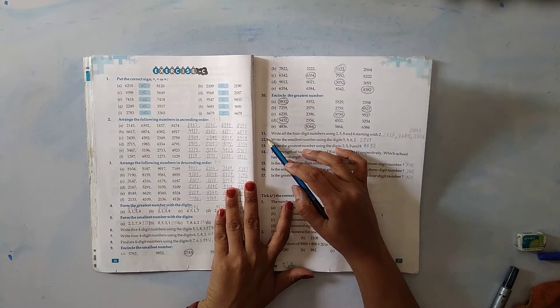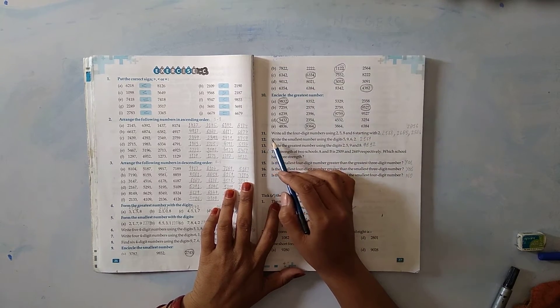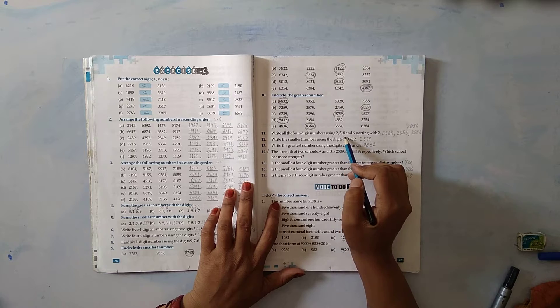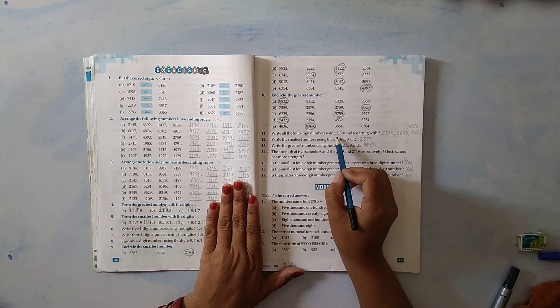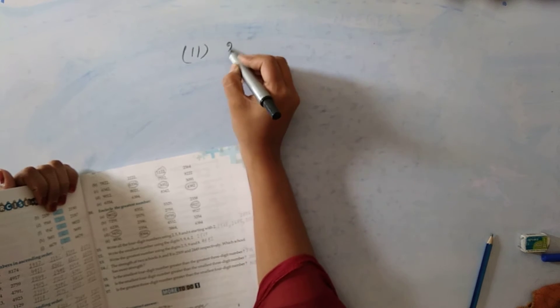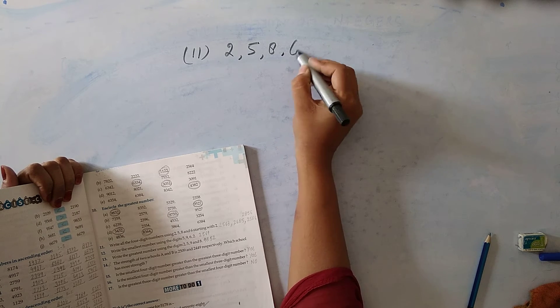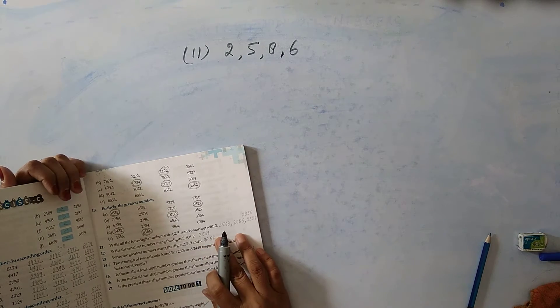Question number 11: Write all the 4-digit numbers using 2, 5, 8 and 6, starting with 2.